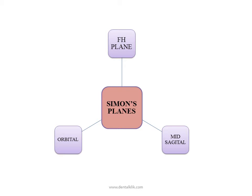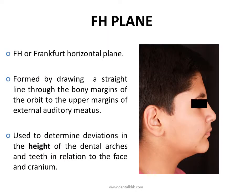The three planes are: the Frankfort Horizontal Plane, the Orbital Plane, and the Mid Sagittal Plane. The Frankfort Horizontal Plane, also called the eye-ear plane, is determined by drawing a straight line through the margin of the bony orbit directly under the pupil of the eye.